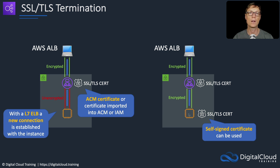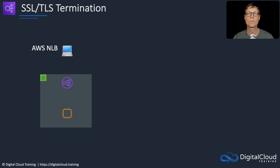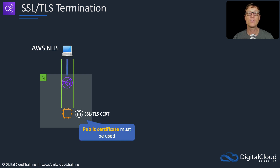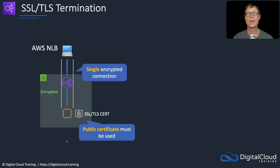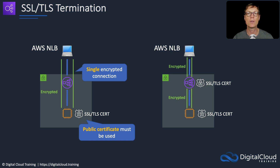With an NLB, we have the client, the NLB, and an EC2 instance. If we place an SSL/TLS cert on the instance (which must be a public certificate), we can create an encrypted tunnel all the way through — the connection is not terminated at the NLB, it's forwarded straight through to the instance, giving a single encrypted connection from client to application. Alternatively, we can have SSL/TLS certs on both the NLB and the EC2 instance, giving two encrypted connections: one to the NLB and one from there to the EC2 instance.